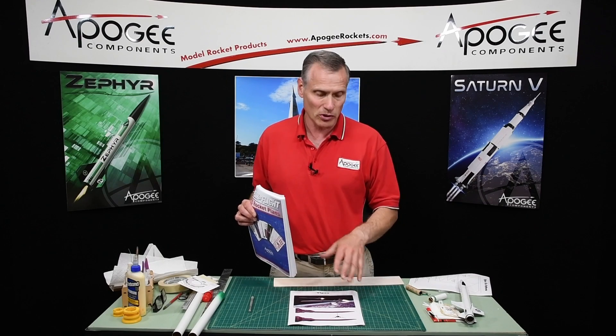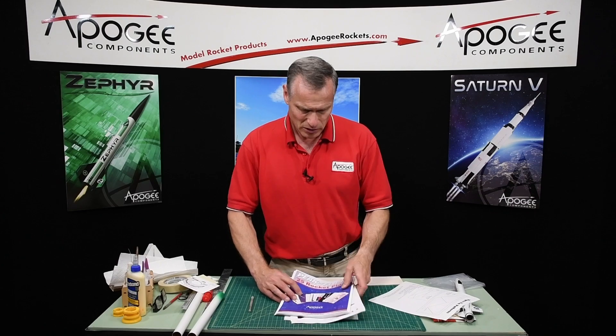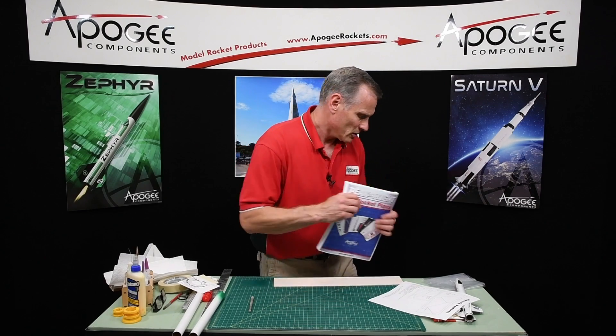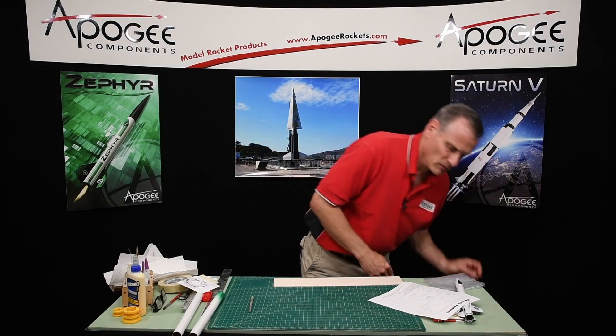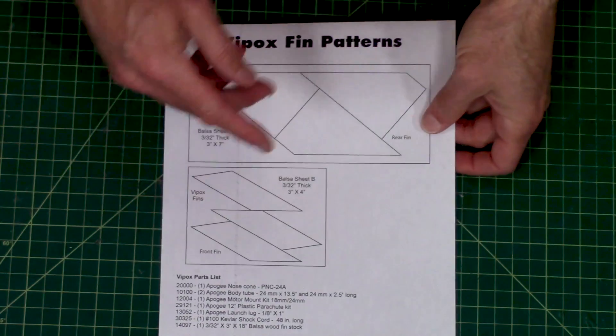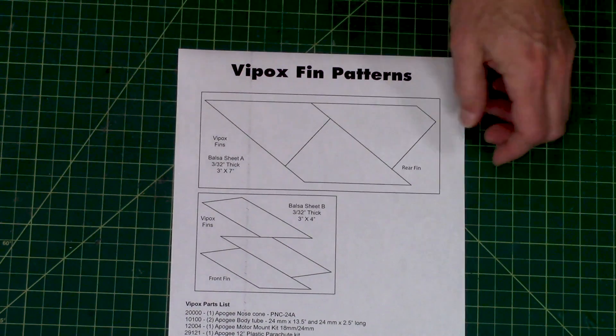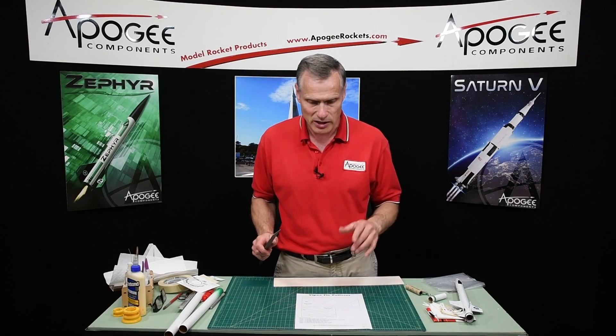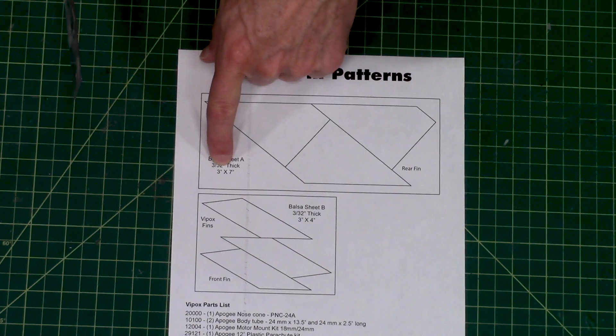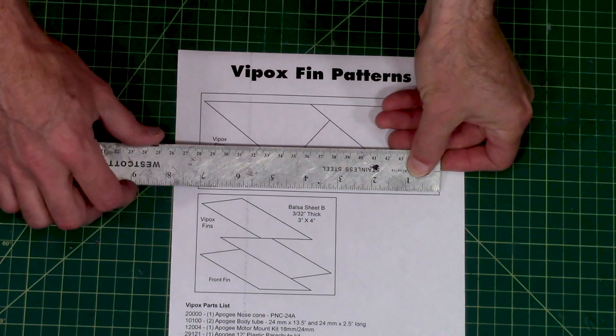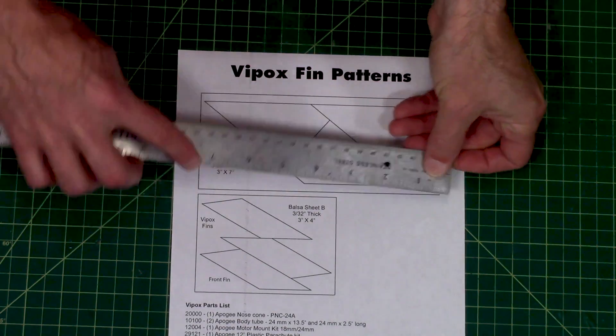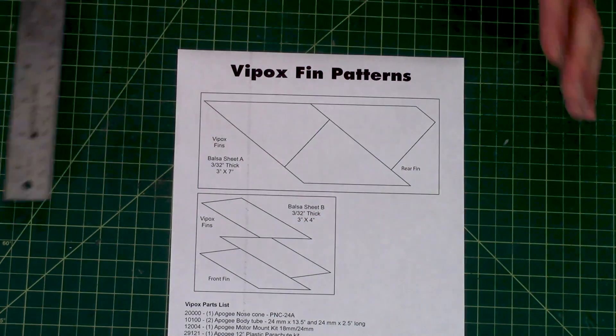Go ahead and print out the pages that you want to build. I've got an extra sheet here which is my fin plans because that's usually where I start. I've printed out the plans and these are full size, but go ahead and double check to make sure your printer printed them at the correct size. This sheet says it's three inches wide by seven inches long, so make sure it's seven inches long and three inches wide.